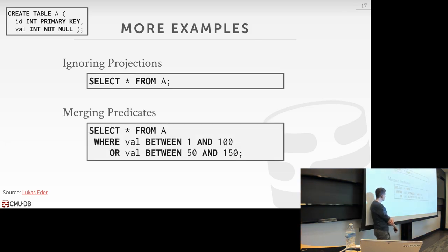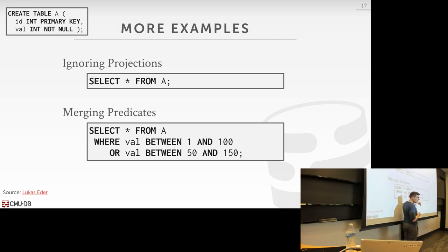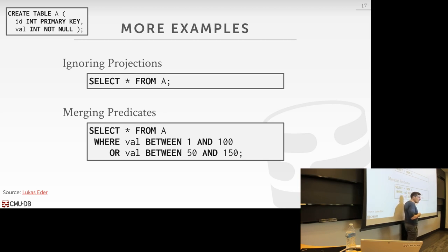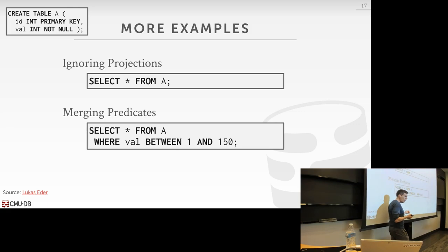The last one is merging predicates. For example, 'select star from A where value between 1 and 100 and value between 50 and 150' — if you think of the number line, this is completely redundant because the intersection is between 50 and 100, which means you can rewrite it as a single 'between 1 and 150' clause.